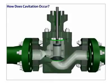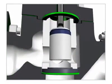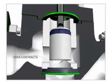Cavitation occurs as a liquid passes through a restriction, such as a valve. The restriction causes the liquid's velocity to increase and its pressure to decrease. The point of maximum velocity and minimum pressure is called the vena contracta.